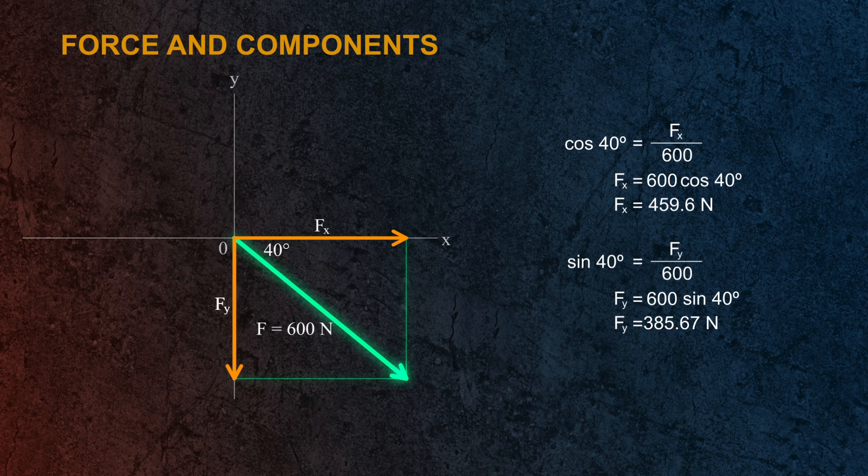So the components of the 600 newton force are 459.6 newtons in the x direction and 385.67 newtons in the y direction.